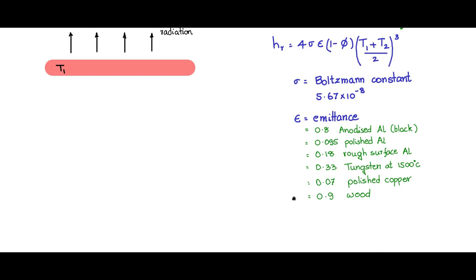These are some of the typical emittance values of common material. Phi is called the shielding factor. It is whenever there are many parallel plates, some of the in between plates are shielded. But for single and two parallel plate system the shielding value is 0.